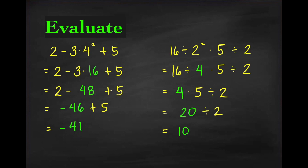For the second expression, 16 divided by 2 squared times 5 divided by 2, apply exponent first: 2 squared is 4. Then perform division and multiplication from left to right: 16 divided by 4 is 4, times 5 is 20, divided by 2 is 10.